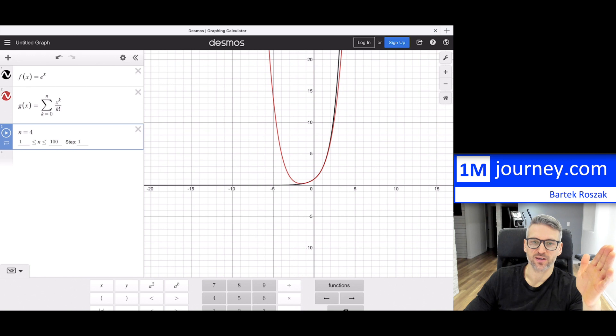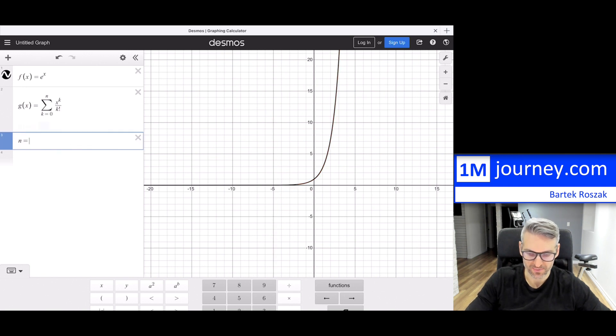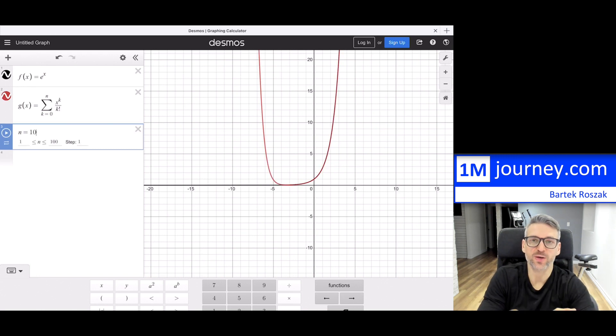But as you make this bigger and bigger and bigger, notice what's happening in here. It starts to look closer and closer to that exponential, and that is exactly what it means. We actually have to go to infinity, meaning n has to be infinity, so it's a sum of all of these different polynomials. That's really, really neat.